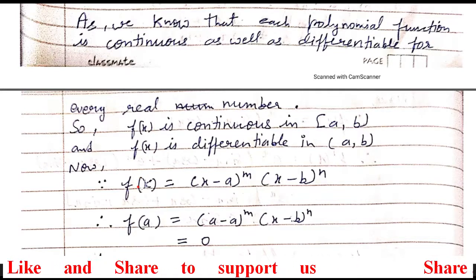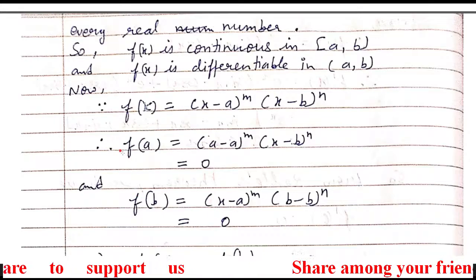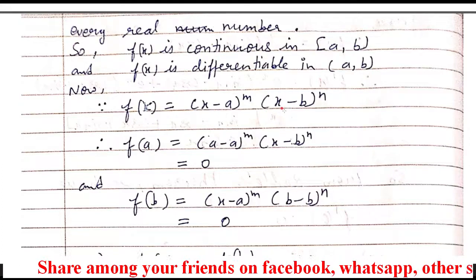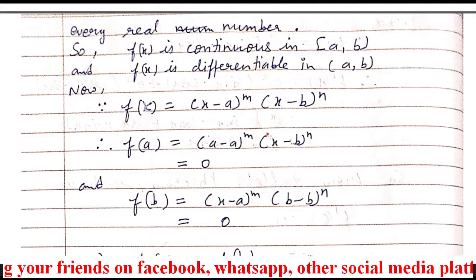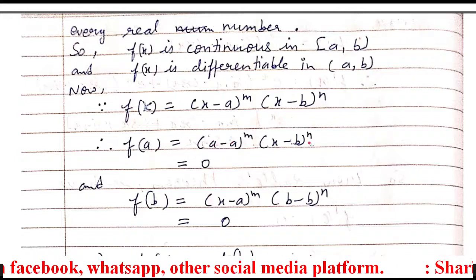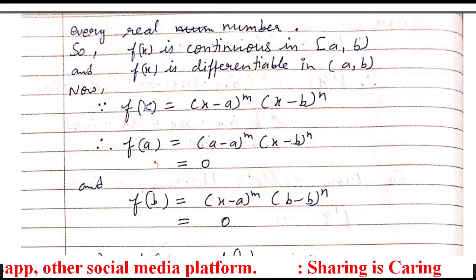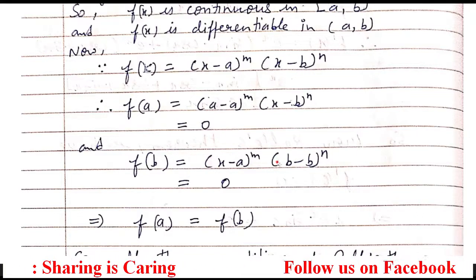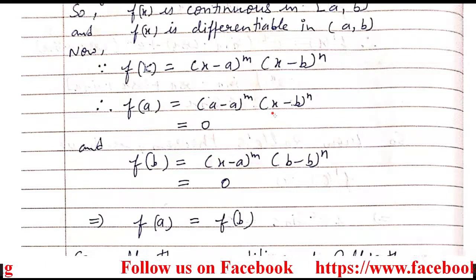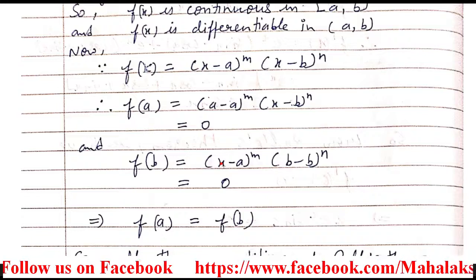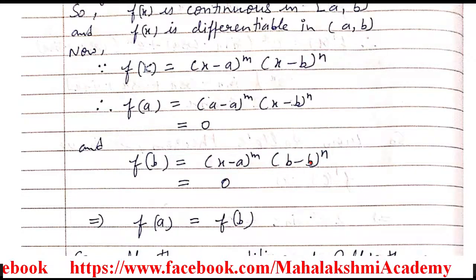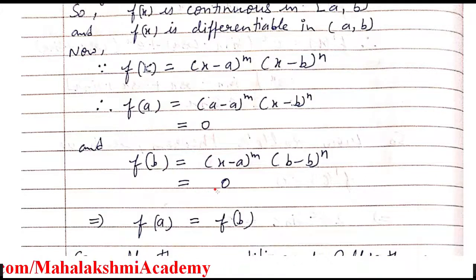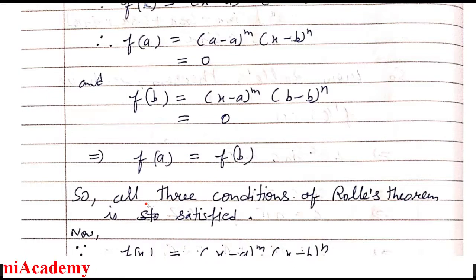Now we find f(a) and f(b). When we substitute x = a into f(x) = (x−a)^m (x−b)^n, we get (a−a)^m times (a−b)^n = 0 times (a−b)^n = 0. So the function's value at the lower limit is 0. When we substitute x = b, we get (b−a)^m times (b−b)^n = (b−a)^m times 0 = 0. So the function's value at the upper limit is also 0, meaning f(a) = f(b). All three conditions of Rolle's theorem are satisfied.